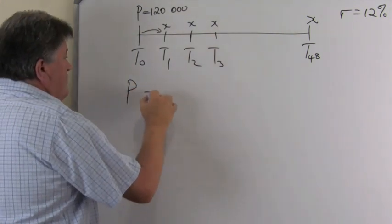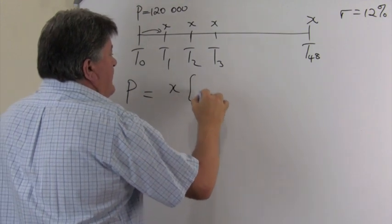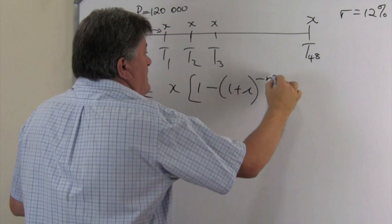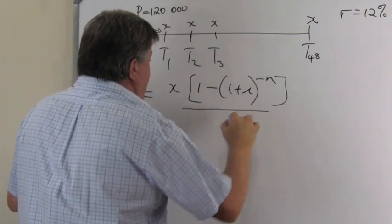So, for present value, it's X bracket 1 minus 1 plus I. Please remember, it's to the minus N over I.